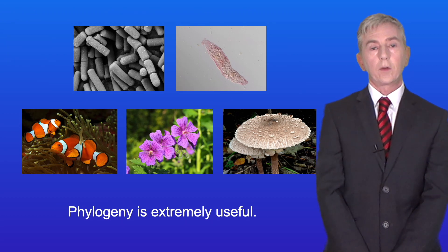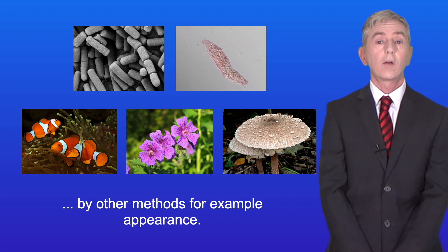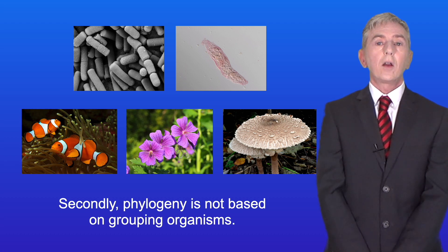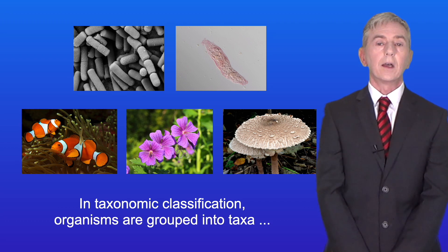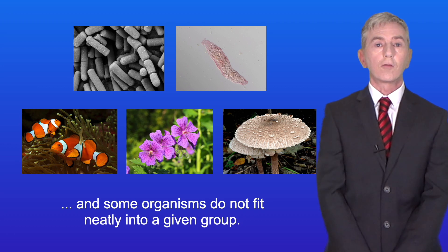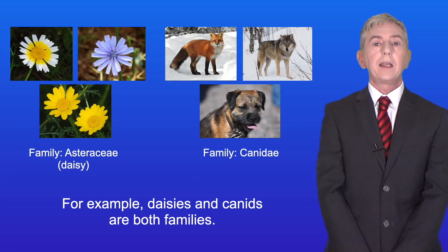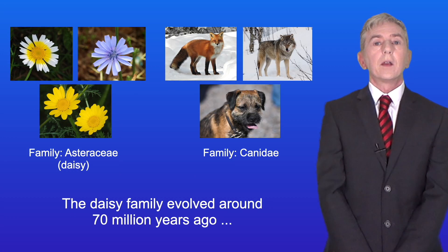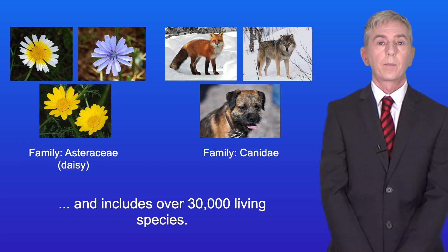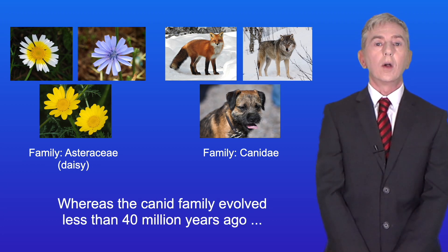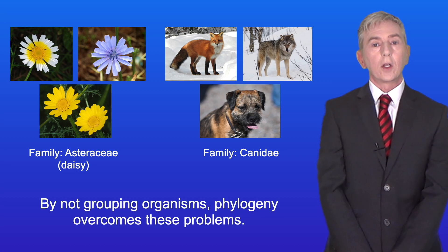Phylogeny is extremely useful. Firstly, phylogeny can be used to confirm the classification of an organism by other methods, for example appearance. Secondly, phylogeny is not based on grouping organisms. In taxonomic classification, organisms are grouped into taxa and some organisms do not fit neatly into a given group. Also, taxonomic classification treats the same taxon as equivalent — for example, daisies and canids are both families. The daisy family evolved around 70 million years ago and includes over 30,000 living species, whereas the canid family evolved less than 40 million years ago and only has 37 living species. By not grouping organisms, phylogeny overcomes these problems.